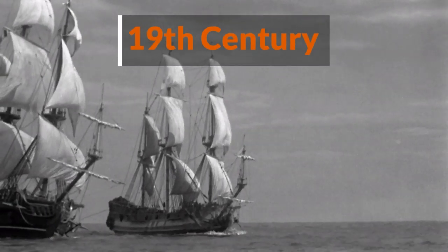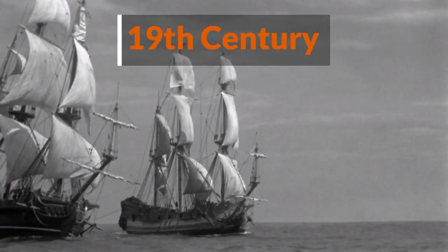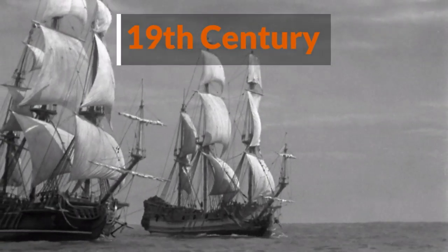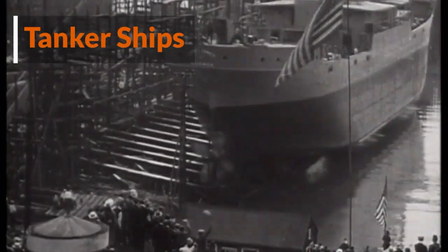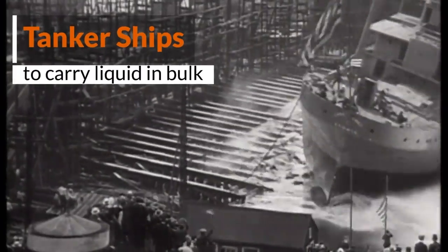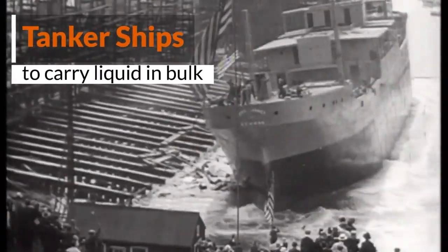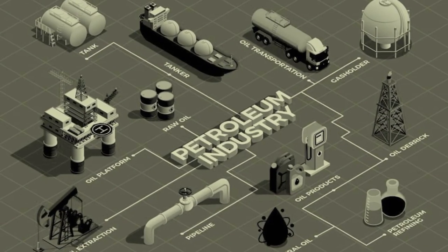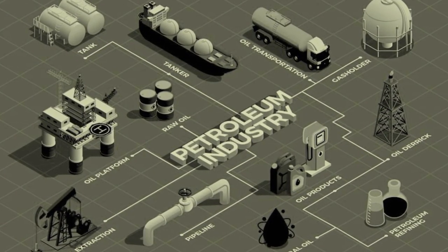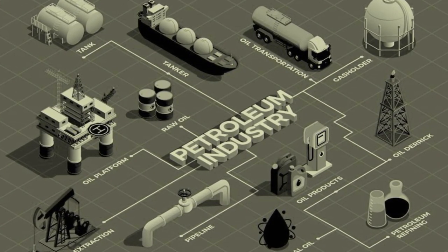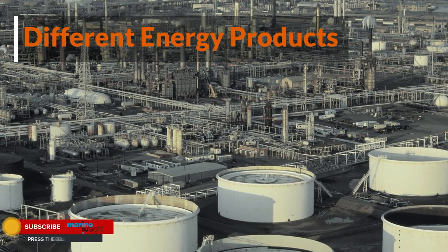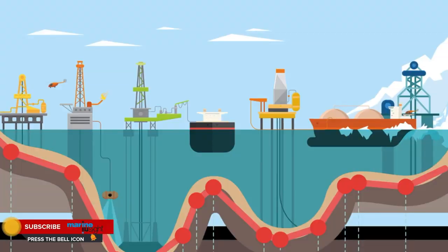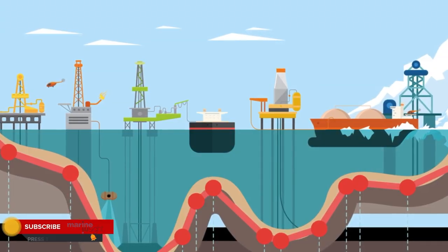The transportation of bulk liquids began in the late 19th century when the discovery and exploitation of oils began. At that time, tankers emerged as the main mode of transportation to carry bulk liquids from refineries to the global market. As time passed, different energy products were produced and the need for various types of tankers came into the real picture.